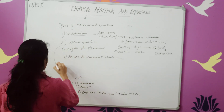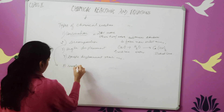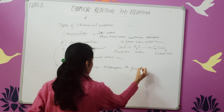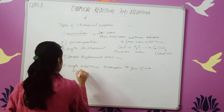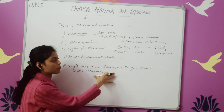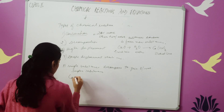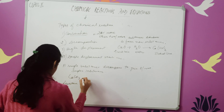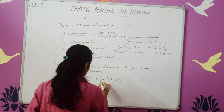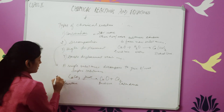Second is the decomposition reaction. What is the decomposition reaction? When a single substance decomposes to give two or more simpler substances, it is a decomposition reaction. For example, CaCO3, which is limestone, when it is heated gives CaO plus CO2 gas — quicklime and carbon dioxide gas.